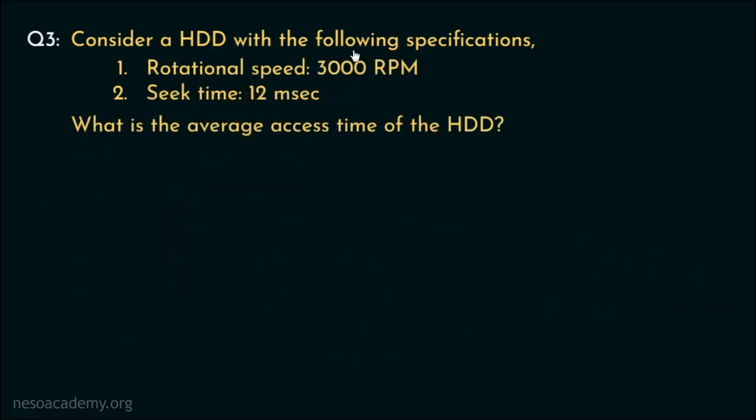Consider a hard disk drive with the following specifications. The rotational speed is given as 3000 RPM and the seek time is 12 milliseconds. We are being asked, what is the average access time of the hard disk drive? So, let's solve it.